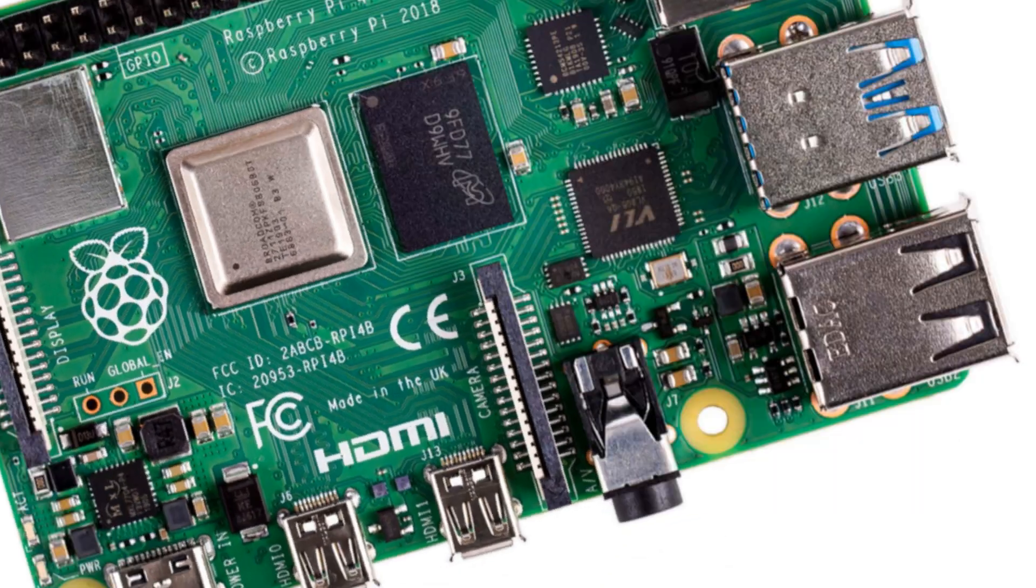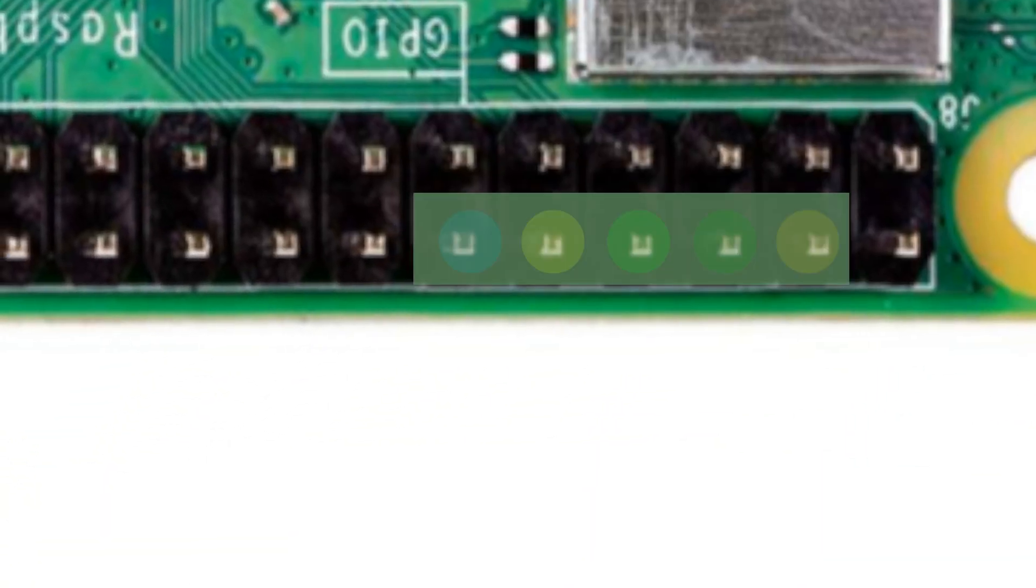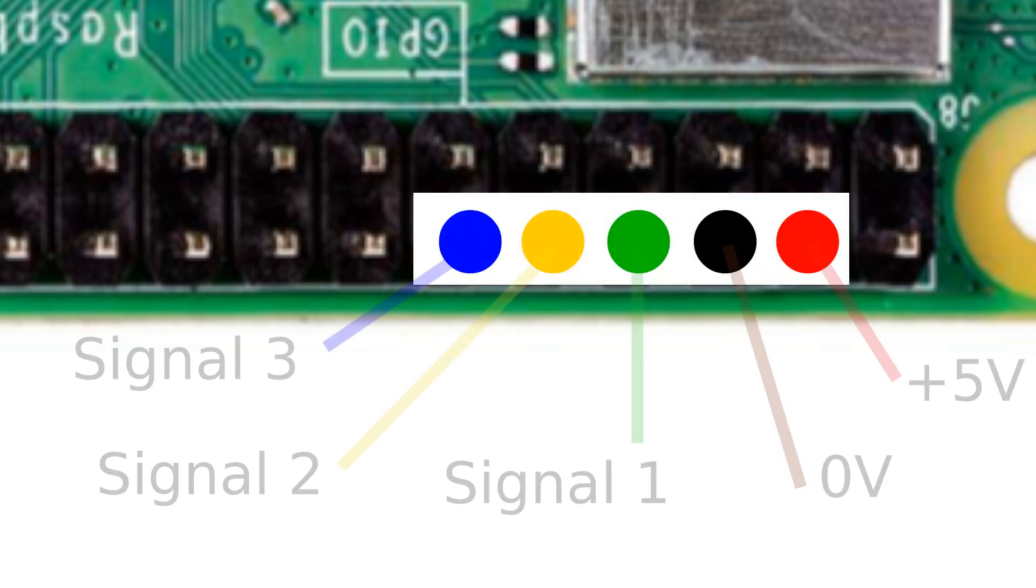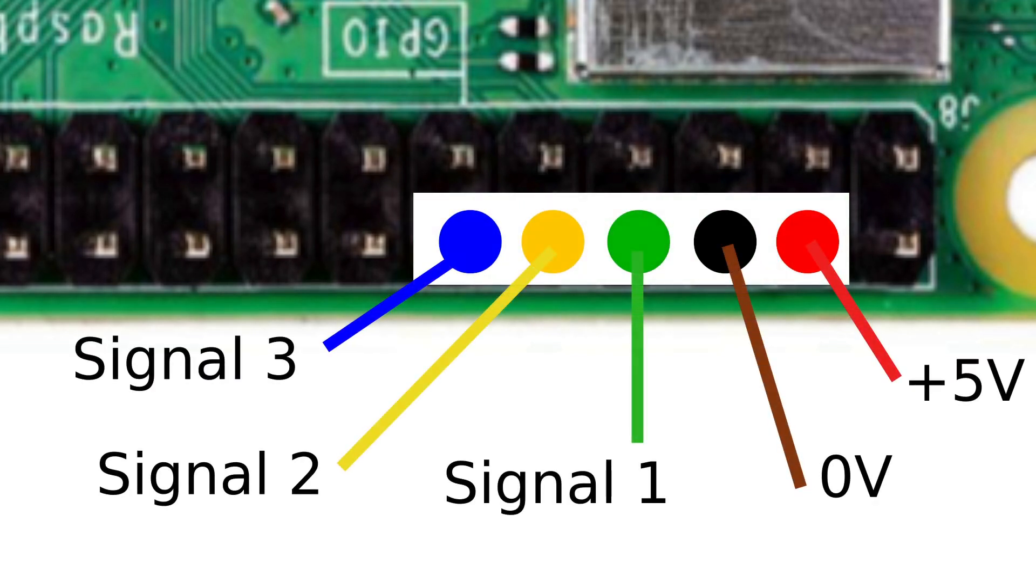For the brachiograph, we're going to use five of these pins to connect our plus 5 volts, 0 volts and three GPIO pins for signals 1, 2 and 3.